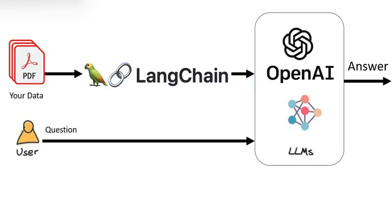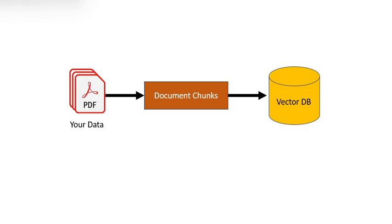Langchain allows you to connect or chain a large language model like ChatGPT or GPT-4 to your own source of data. Specifically, Langchain takes your own document, your own data, and your chosen large language model like GPT-4 as a reference, and converts it into chunks, storing those chunks in a database called a Vector Database.